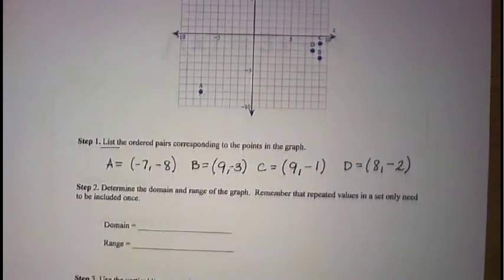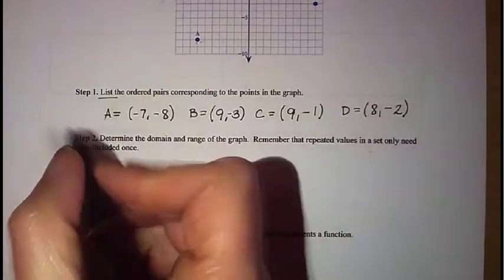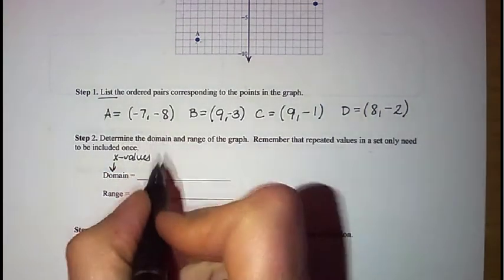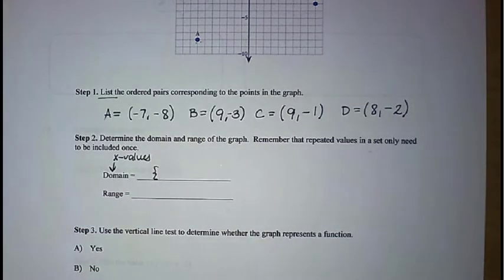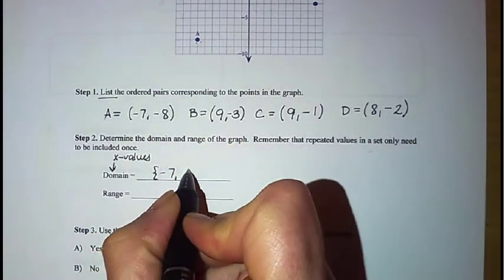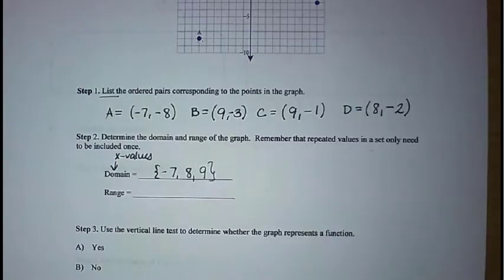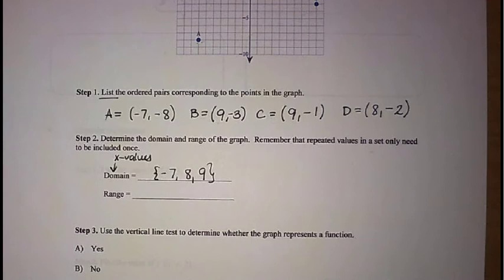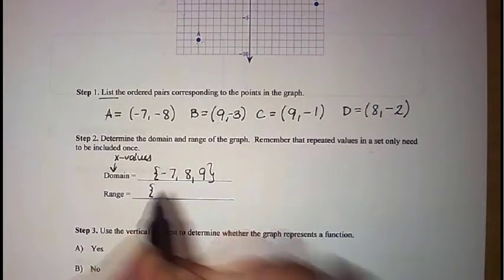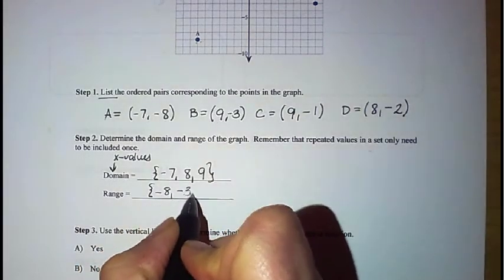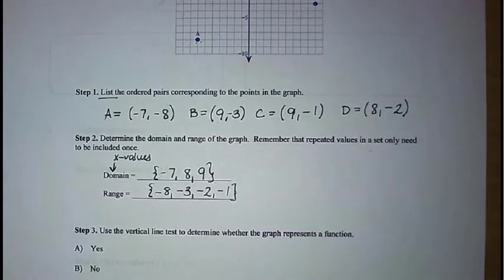So the next question is asking us to find the domain and range. Well, remember that domain here is your x values. So all we have to do to find our domain is list all of our x values present. So we're going to use a curly brace since we are doing this in what we call set notation. So we're just going to start with our smallest value first. We're going to do negative 7, and then I'm going to do 8 for my D, and then 9. And I don't want to list 9 twice. I realize that 9 is for both B and C, but I only want to list the x values one time, even if there is a repeater. So now we're going to do the same thing for our range. We're going to do our curly brace. Again, we want to start with our smallest number. That would be negative 8. And then it looks like we've got negative 3, negative 2, negative 1, and that would be our range.